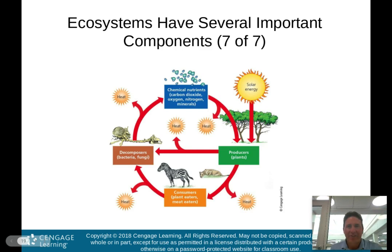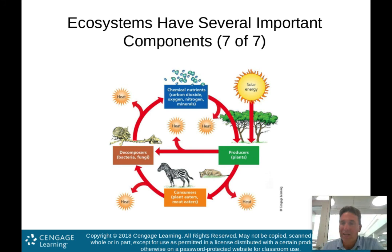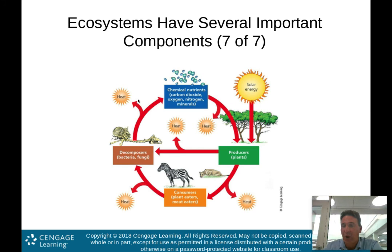Putting it all together — these components of the ecosystem: solar energy, that high-quality energy from the sun, comes in, and producers or plants use that energy to create glucose. You'll notice heat listed here — that's the waste product, which we'll talk about in a second. The producers are plants.